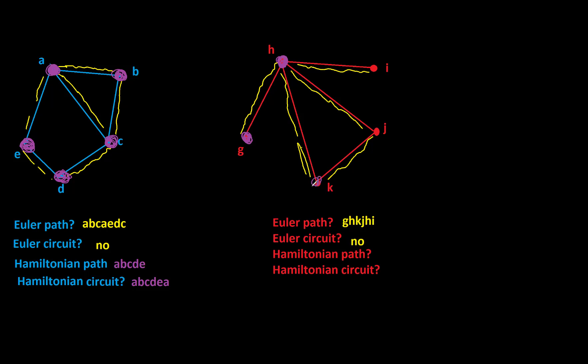But then again, I can't come back to H and I've left out I. So if I traveled out to K and traveled to J, then I'm stuck because the only way I can hit vertex I is to come back and visit H and I don't want to do that. So the answer here would be a no. There is not a Hamiltonian path nor is there a Hamiltonian circuit.